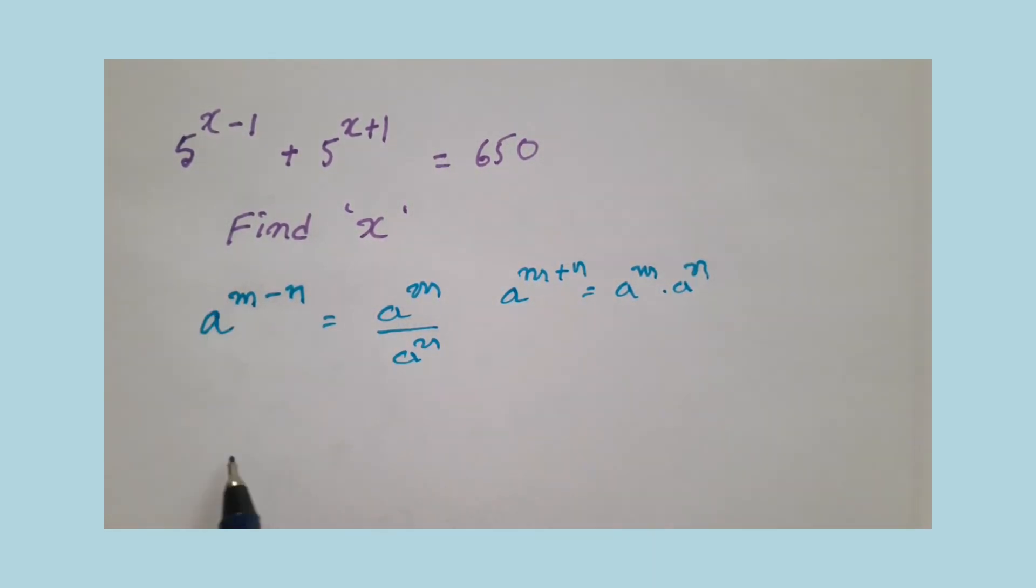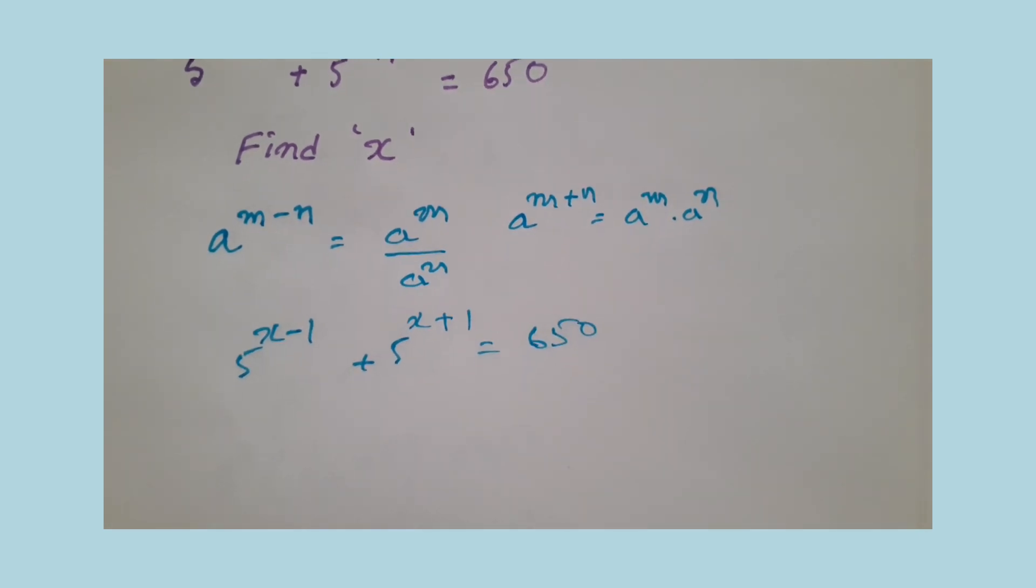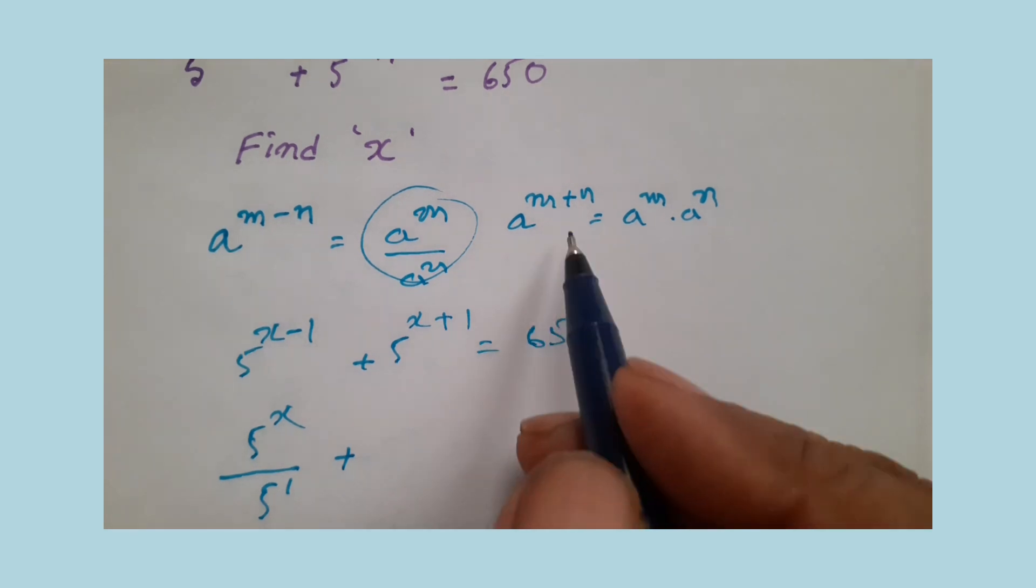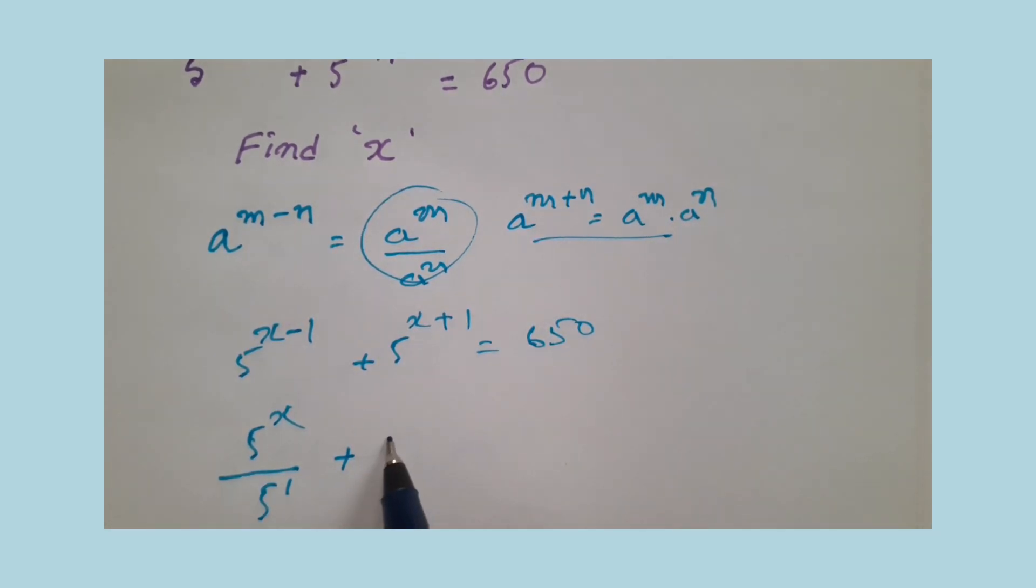Here, 5 power x minus 1 plus 5 power x plus 1 equals 650. Using the first law, 5 power x minus 1 can be written as 5 power x divided by 5 power 1. For the second term, using the second law, this can be written as 5 power x times 5 power 1 equals 650.